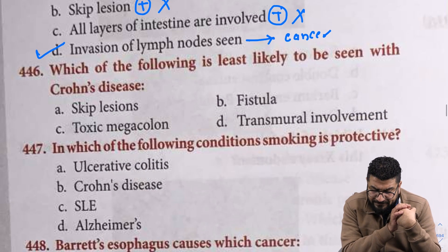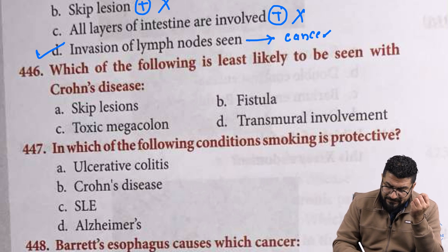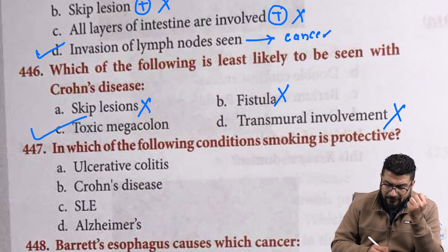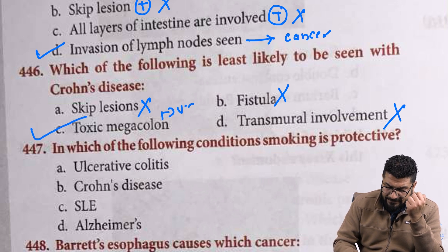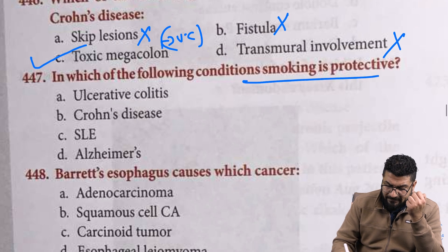Following is least likely to be seen in Crohn disease: skip lesions are common, fistulas are common, transmural involvement is common — but megacolon is not seen. Megacolon is a feature of ulcerative colitis.